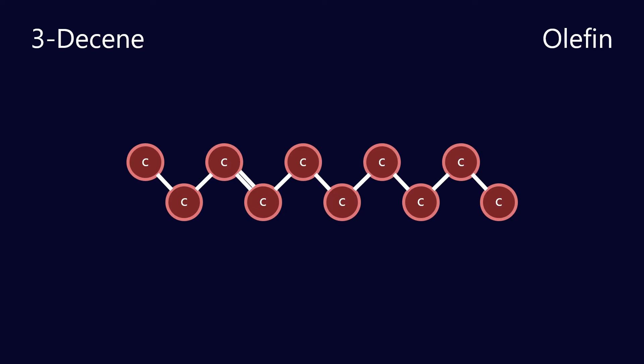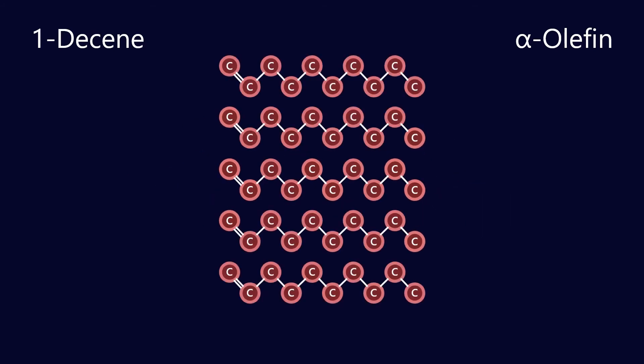This happens to be 3-decene because the double bond is on the third carbon in the chain. If that double bond moves to the first carbon in the chain it's known as 1-decene, and this kind of molecule is known as an alpha olefin because the double bond is in the first position. And if we were to take a whole bunch of these and connect them together then we have a poly alpha olefin.